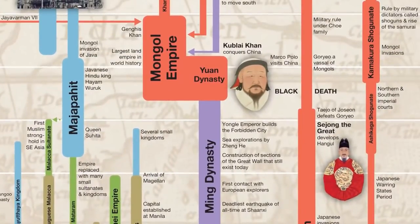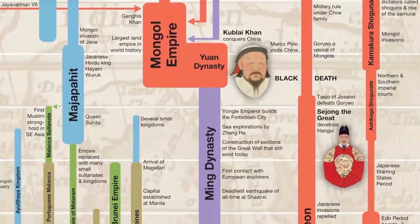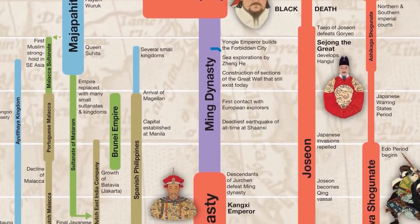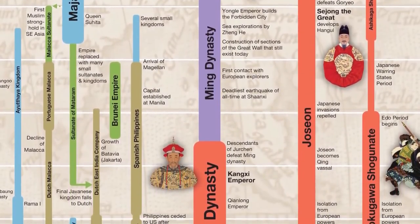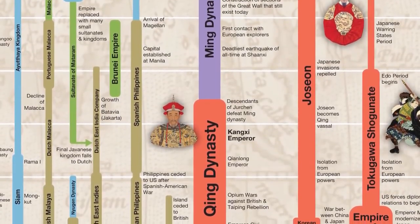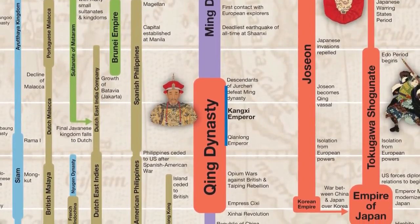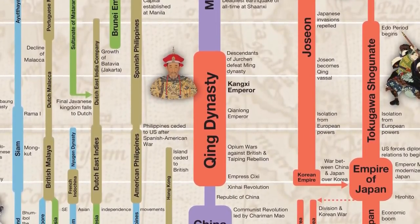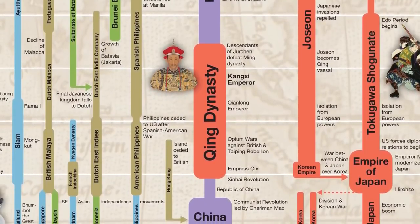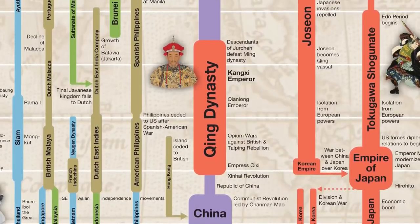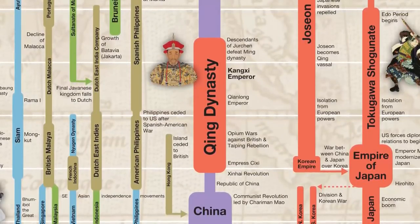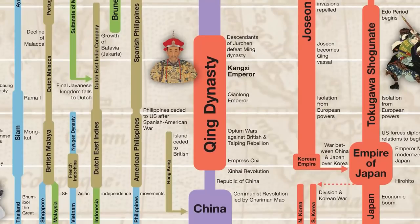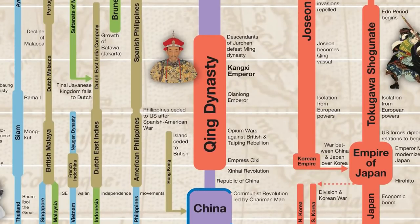Now we come to China. The Mongol-led Yuan dynasty was eventually defeated by the Ming dynasty. They were the ones who built the Forbidden City in Beijing and built the parts of the Great Wall that are still standing today. They were followed by the final imperial dynasty, the Qing dynasty. The Qing emperors were actually from Manchuria to the north and therefore were not ethnically Chinese. They ruled China until the Xinhai Revolution, when China became a republic. Soon after this, the man known as Chairman Mao took over, leading the communist revolution and making China into the communist state it is today.